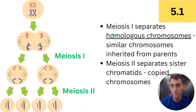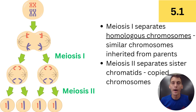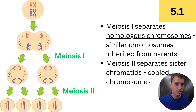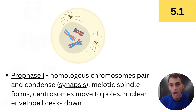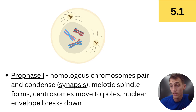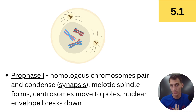Homologous chromosomes are separated during meiosis I — these are the similar chromosomes inherited from each parent. During meiosis I, the chromosomes inherited from mom and dad get split up. Then during the second division, the sister chromatids — which are the copied chromosomes — get separated, and that's what meiosis II is about. Let's walk through the phases. Prophase I: homologous chromosomes pair and condense — this is called synapsis — forming what's called a chiasma or chiasmata where they're stuck to each other.